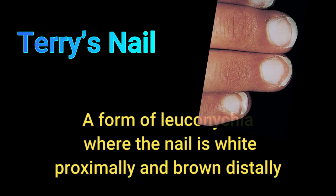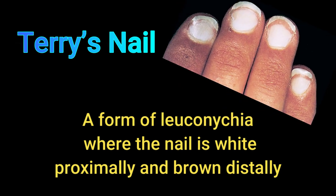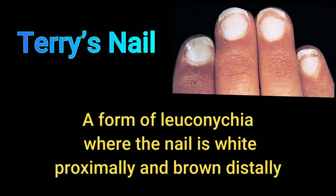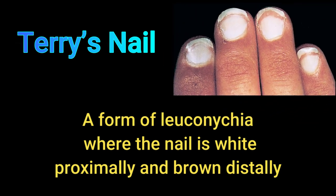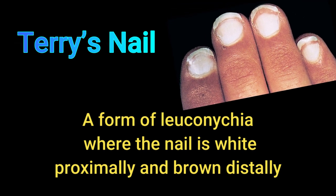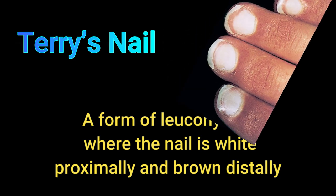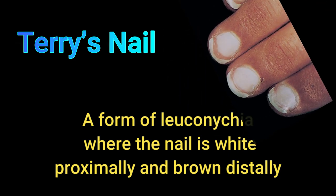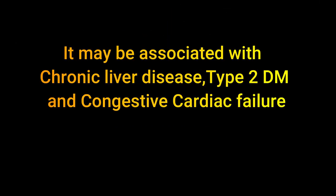Now, Terry's nail is a form of leuconychia where most of the proximal part of the nail is white and only a small distal portion is brown, as you can see in the photograph. It may be associated with chronic liver disease, type 2 diabetes mellitus, and congestive cardiac failure.